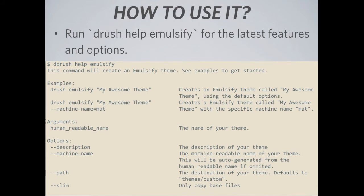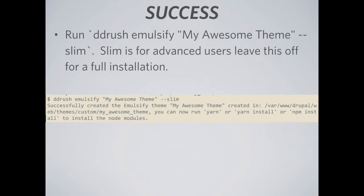Please note that the human readable name is the only required argument. The options don't have to appear in any specific order, and you can pass just one if you only want to change that one from its default. If your new theme was successfully created, you should see a success output message. In the example shown, I used the slim option because it's a bit faster, but again it's optional. The success message contains the name of the theme created, the path where it was installed, and the next required step for setup.